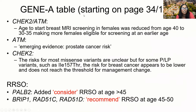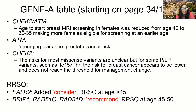On our gene table, which starts on page 34 of 140: for CHEK2 and ATM, the age to start breast MRI screening in females was reduced from age 40 to age 30 to 35, making more females eligible for screening at an earlier age. For ATM, we added emerging evidence for prostate cancer risk, but at this point we didn't make any guidelines or refer to any guidelines about screening or surveillance. For CHEK2, we called out that the risk for most missense variants is unclear, but for some pathogenic or likely pathogenic variants such as the I157T variant, the risk for breast cancer appears to be lower and does not reach the threshold for management change.